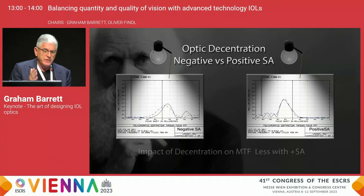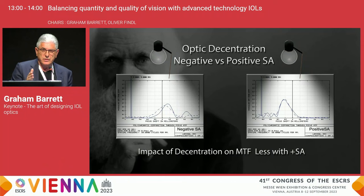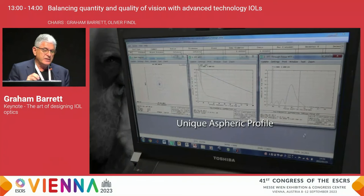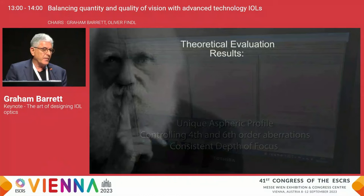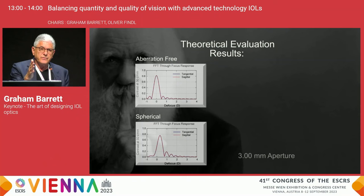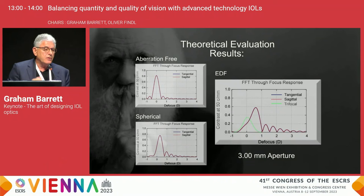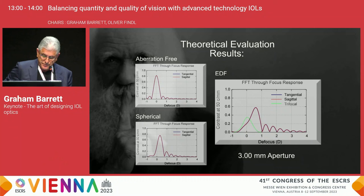Another interesting optical phenomenon is that when you have negative spherical aberration, the impact of even minor decentration is much greater than with an optic with positive spherical aberration. The Rayner EMV has a unique aspheric profile optimized for each power in the dioptric range. This provides a consistent extent of depth of focus, minimizing the loss that you might expect with some spherical aberration.